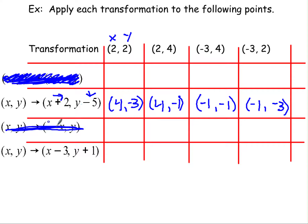So that's all we're doing — whenever you see a transformation asking you to add or subtract on your X and Y, it's just sliding the figure. Now let's look at the second transformation: subtracting three from X means moving left three, and adding one to Y means moving up one. For the point (2, 2): two minus three is negative one, and two plus one is three, giving (-1, 3).